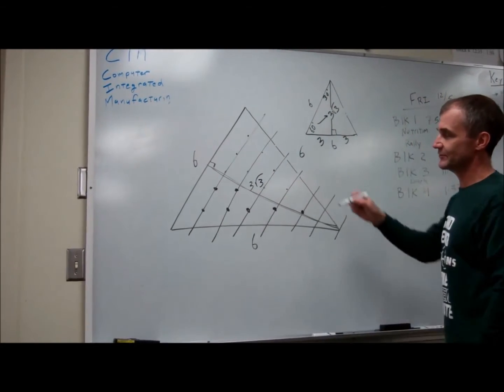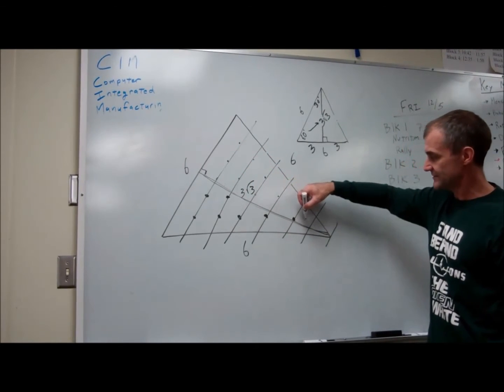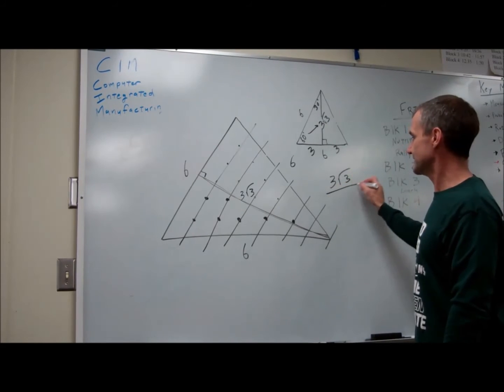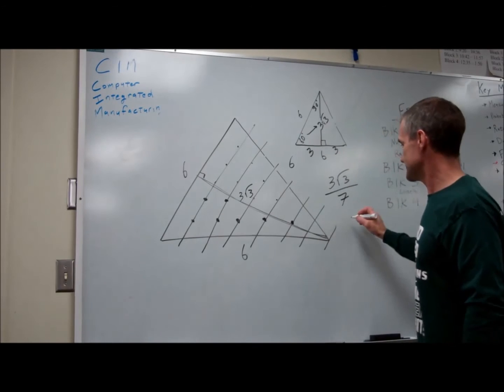So this distance right here is 3 root 3. So I have to take that 3 root 3 and divide it by 1, 2, 3, 4, 5, 6, 7. So I take 3 root 3, divide that by 7 on my calculator and I get 0.74.